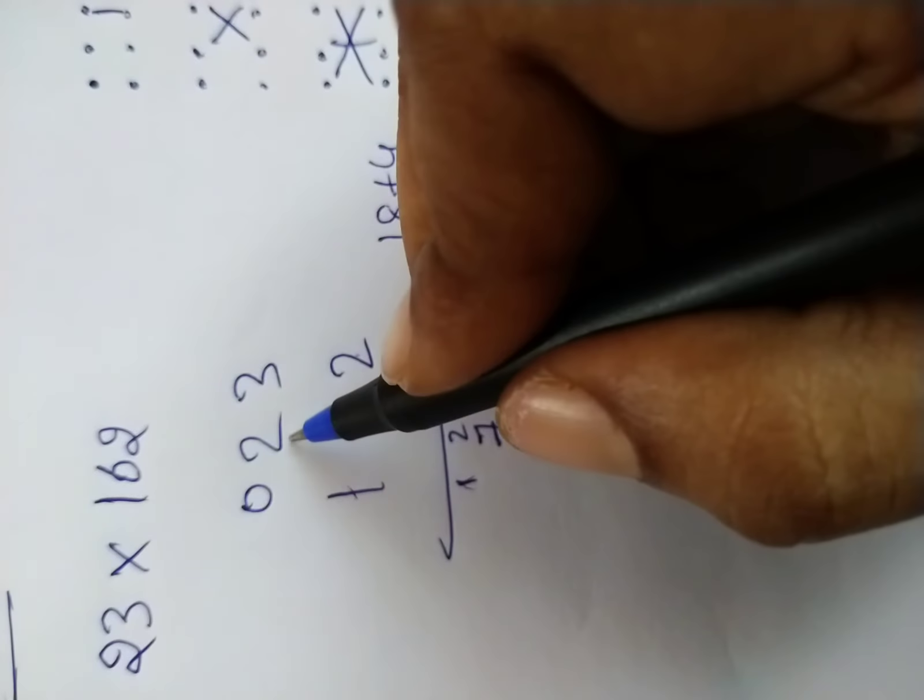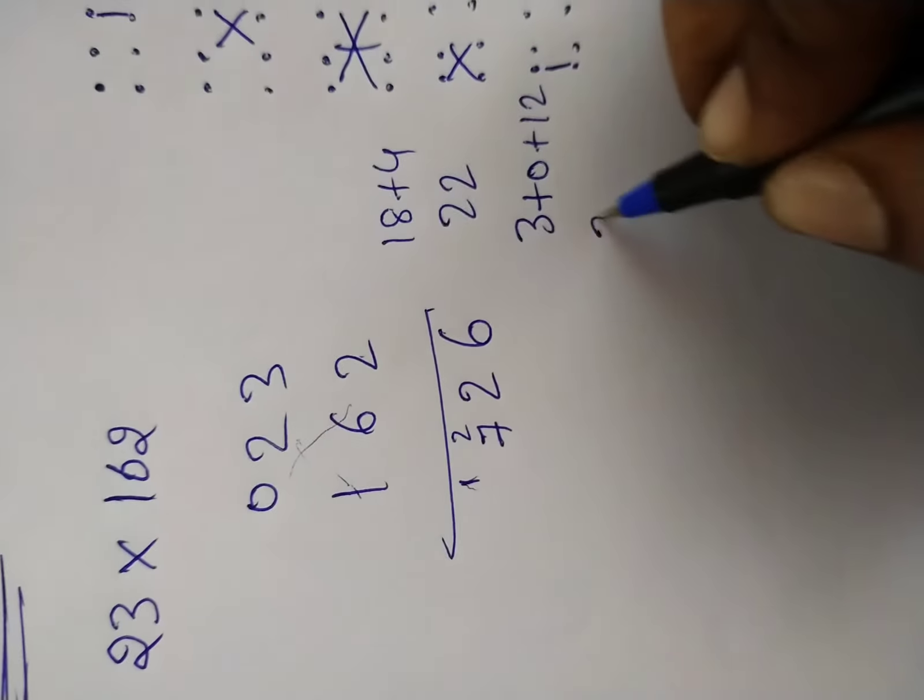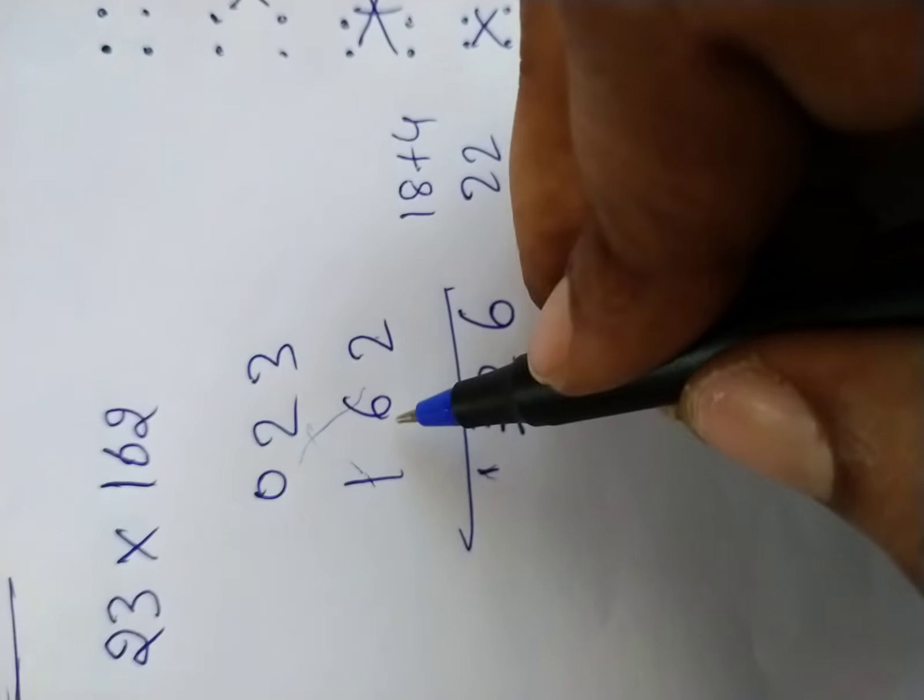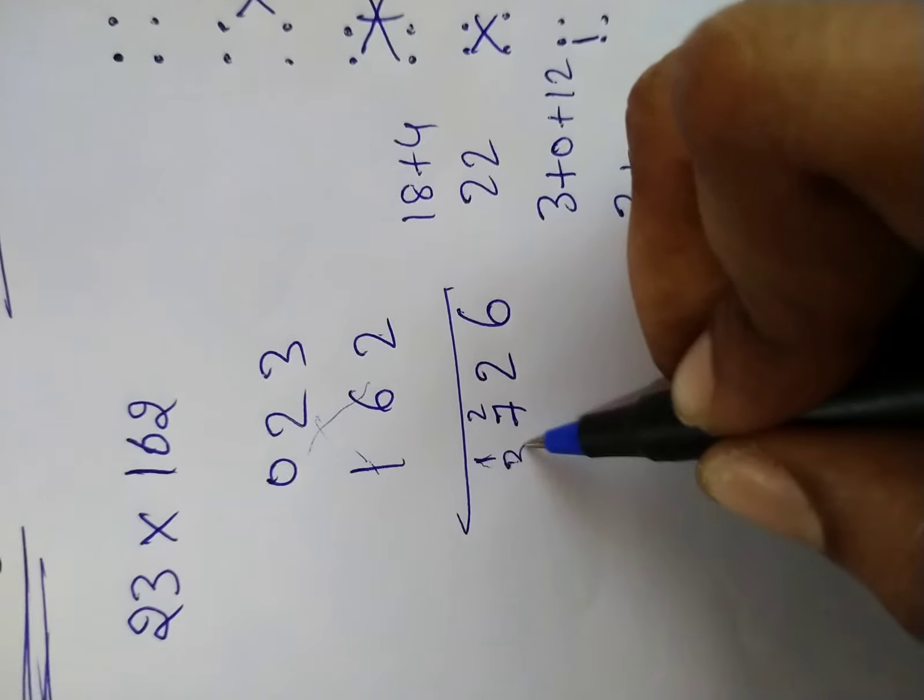Next tens and hundreds place. 2 times 1 is 2 plus 6 times 0 is 0. And here 1 carry forward. 2 plus 1 equals 3.